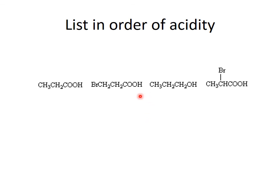List these in order of acidity. We have three carboxylic acids, which of course are going to be more acidic than an alcohol. The difference is an electron-withdrawing group. The bromo substituent here is very close to the carboxylic acid, and here it's farther away, but bromo is electron-withdrawing. The most acidic is the one where the electron-withdrawing bromo group is closest to the carboxylic acid functional group. Number two is where it's a little farther away. Number three is where there's no electron-withdrawing group, and then the alcohol is the least acidic of all.